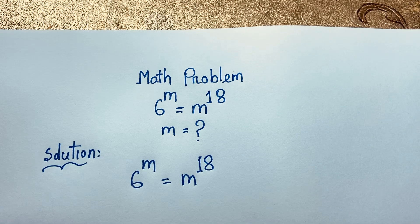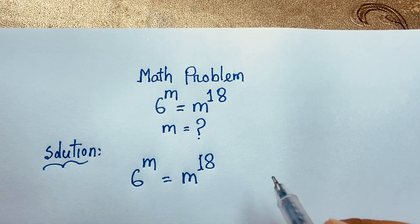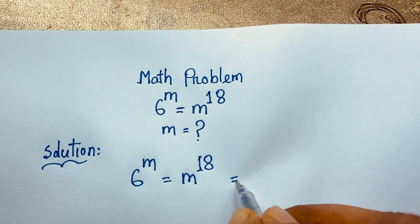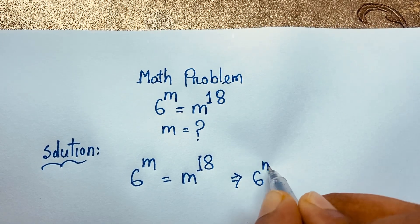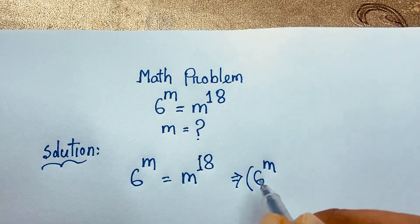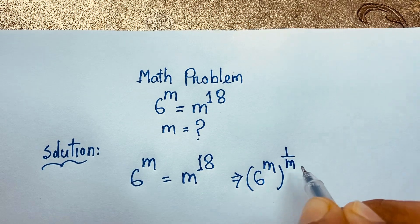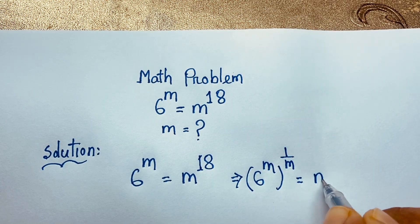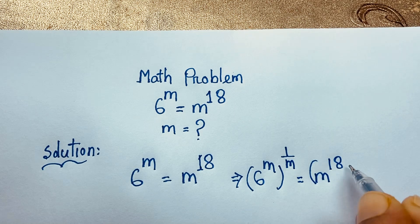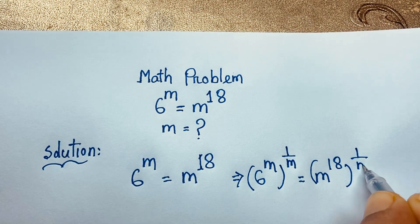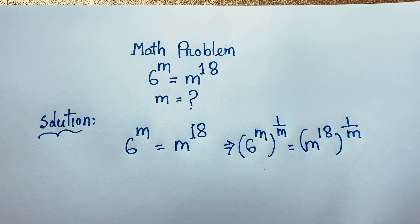First of all, I apply both sides the exponent 1 over m. So it will be: 6 to the power m, bracket whole to the power 1 over m, is equal to m to the power 18, bracket whole to the power 1 over m.